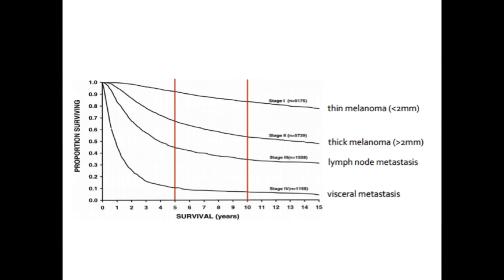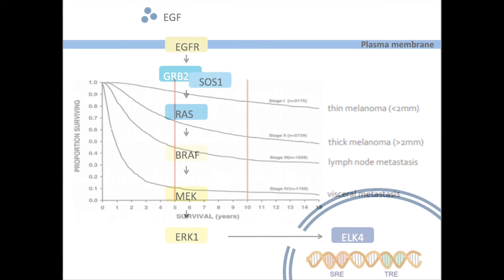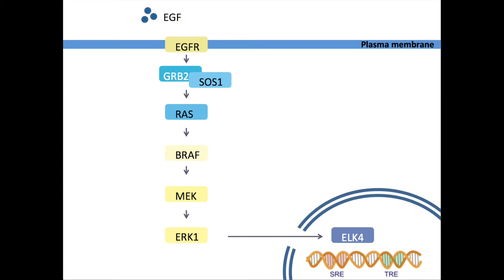Traditionally, metastatic melanoma was difficult to cure. Because melanoma is most often detected in the fourth stadium when the cancer has already spread, resection is not an option. However, this knowledge about the molecular mechanisms of the pathway, in particular about BRAF, has led to the development of new targeted therapies.